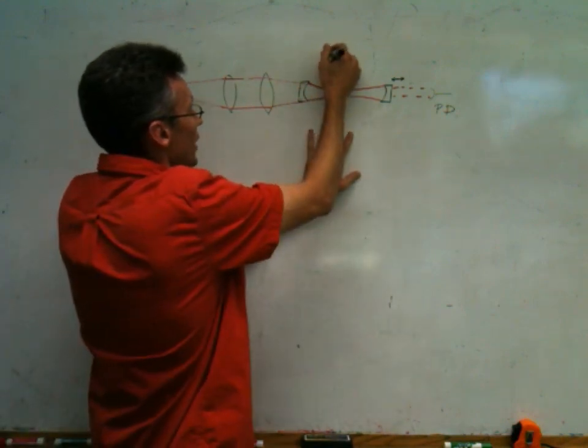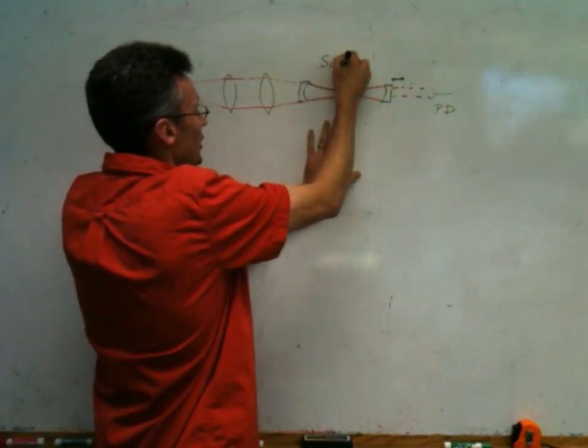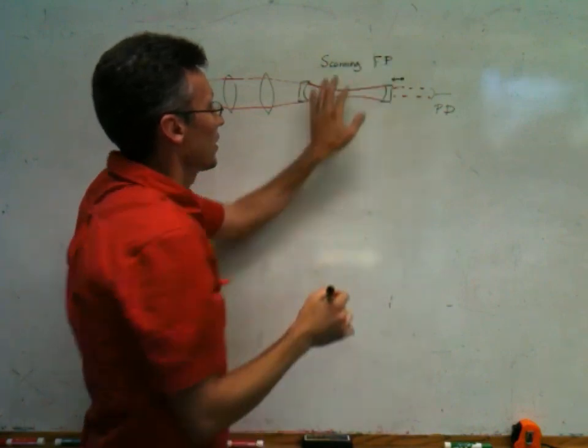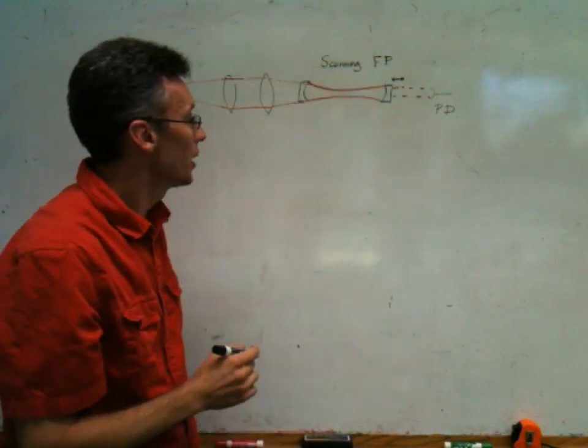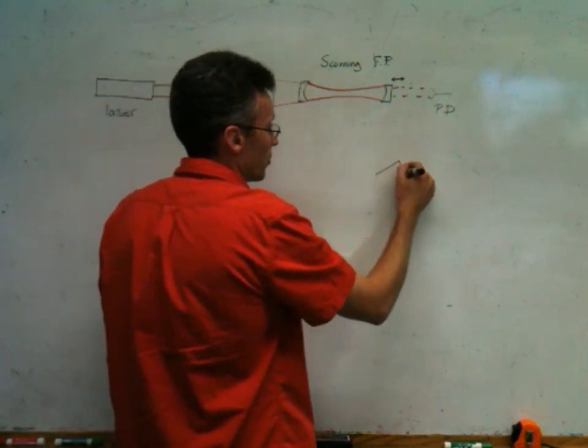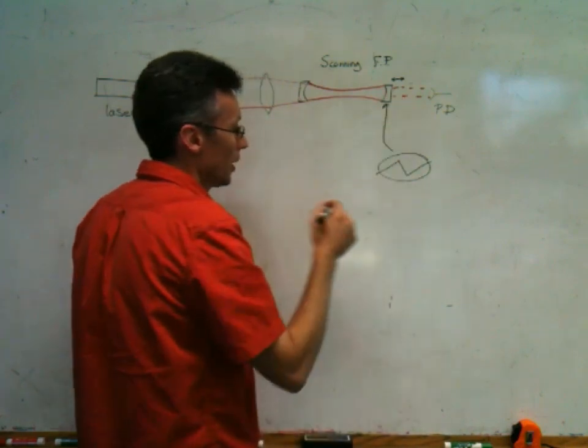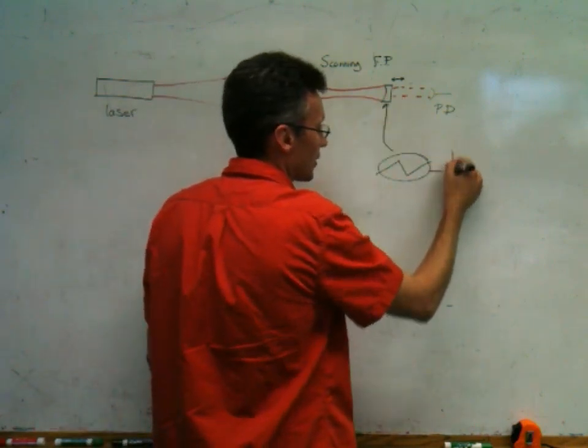So, in this configuration, this is called a scanning Fabry-Perot cavity. Scanning, because we're going to scan the length of the mirror. And so, typically what we would do is put in a sawtooth waveform to the mirror, and then we would plot, on the oscilloscope,